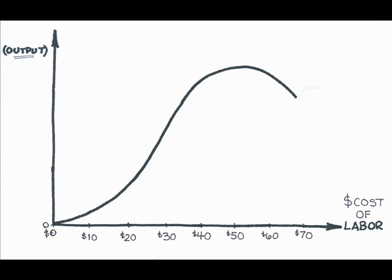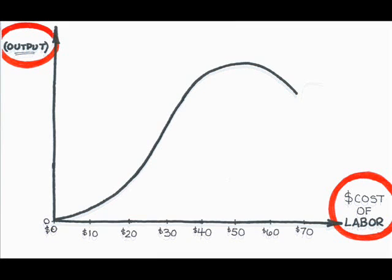Now I have a diagram illustrating the relationship between the output that I produce and my labor cost, or variable cost. The only issue I have with this diagram is that it's inconsistent with the market, i.e. supply and demand, diagrams that we've spent so much time on.